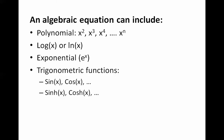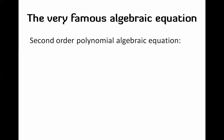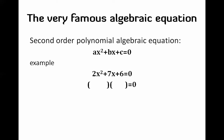There is a very famous algebraic equation that's pretty simple to solve — the second-order polynomial, in the form ax² + bx + c. Usually the way we solve this is by simplifying it into two brackets and then solving each bracket separately to get the solution.